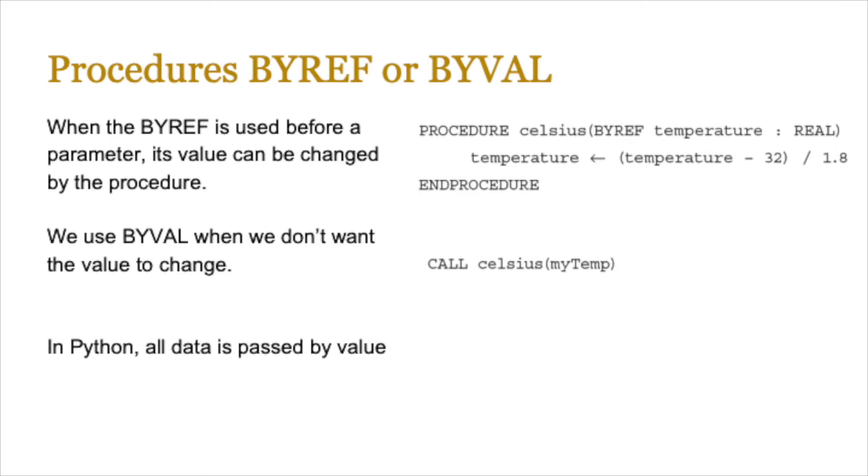However, in pseudocode, you will need to. So just be aware of that. Sometimes in exam questions, you'll see by ref, which basically means that that variable is going to be changed by the procedure. So in this case, you can see that the Celsius by ref temperature, which is real, is taken from the main program and then converted into a different kind. So perhaps Celsius is converted into Fahrenheit. So the original value of temperature is changed.